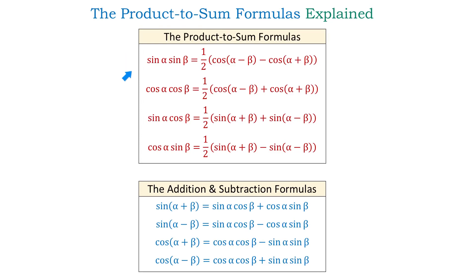We have four product-to-sum formulas, and in each one, on the left side, we have a product of sine and cosine of two different angles, alpha and beta. So each expression on the left side represents a product.